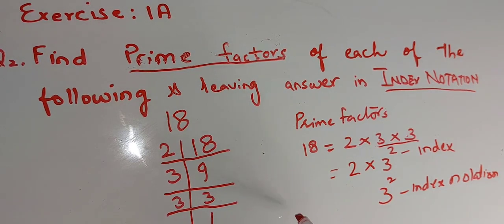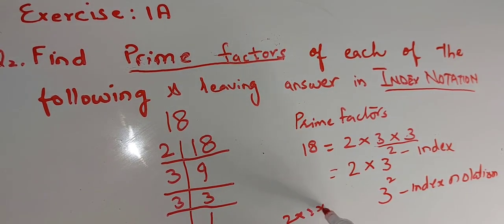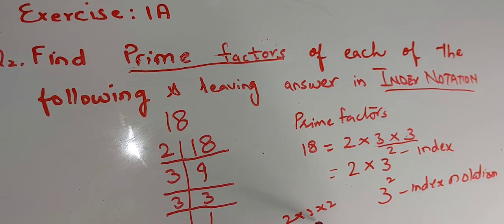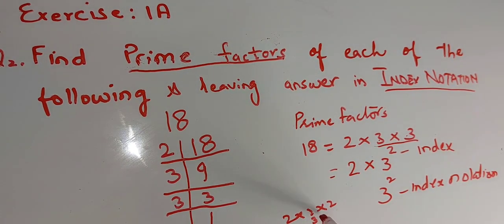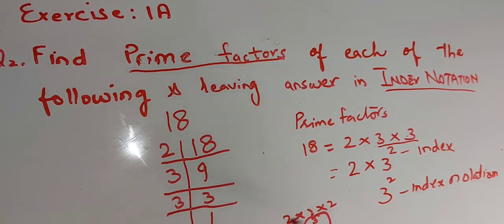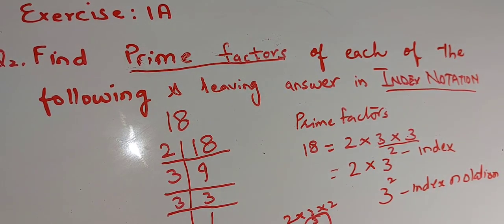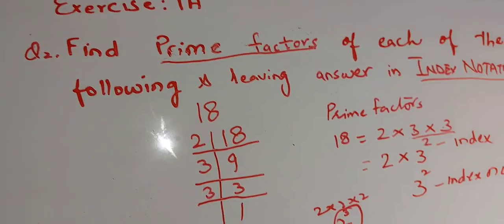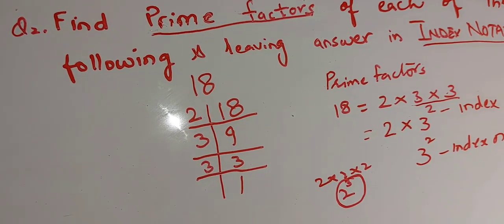For example, if you have 2 multiply by 2 multiply by 2, you write it as 2 to the power 3. Writing in this way is called index notation.